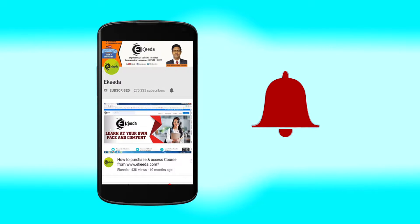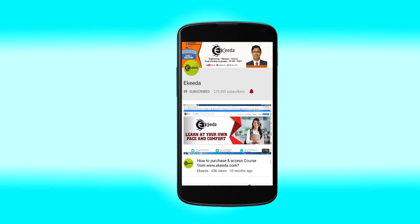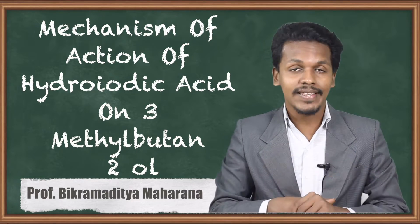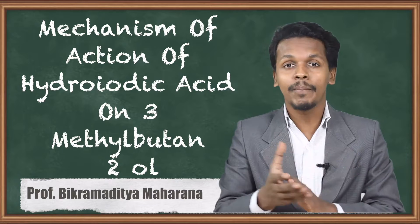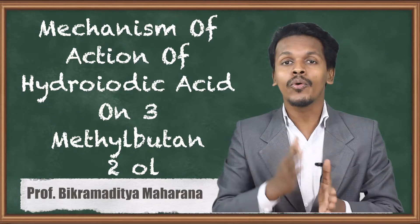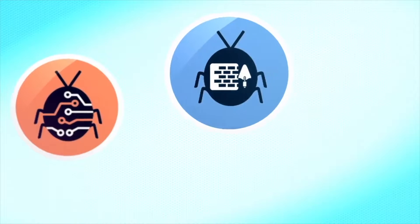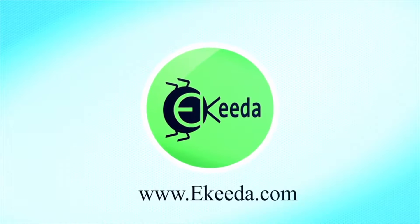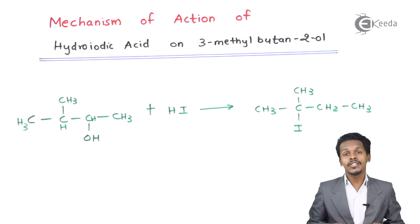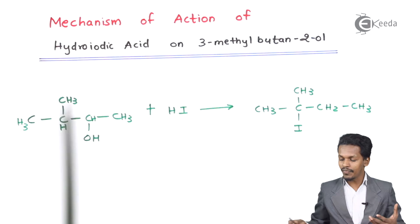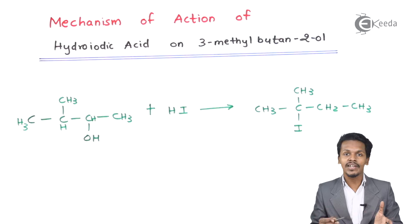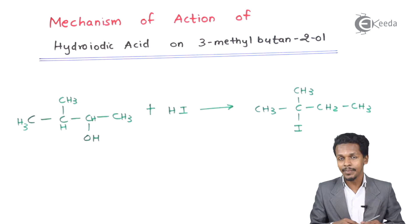In the previous lecture we considered the reaction of alcohol with hydroiodic acid. Based on that example, we are going to do the mechanism of that reaction. In this topic we are going to talk about the mechanism of action of hydroiodic acid on 3-methylbutan-2-ol. This is the general reaction we discussed in our previous example.